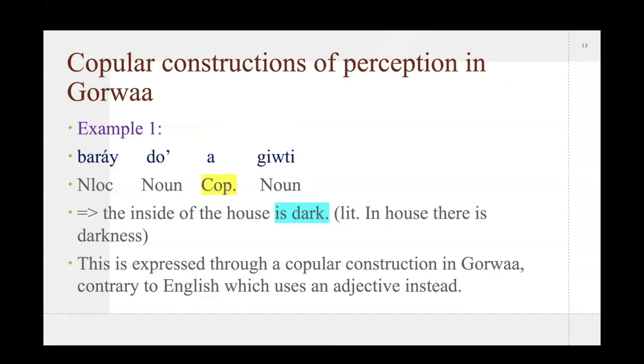The third way of expressing perception in Gorwaa is copular constructions. I only have one example of this, although I'm pretty sure this does occur often. It's just that I only had it come up, like, a couple of times or once, and this was the best example I could give. So, we have barai do agiuti. Inside the house there's darkness, or the inside of the house is dark, and the literal translation is, in the house there is darkness. This is expressed through a copular construction in Gorwaa, in comparison to English, which uses an adjective. So, yeah.